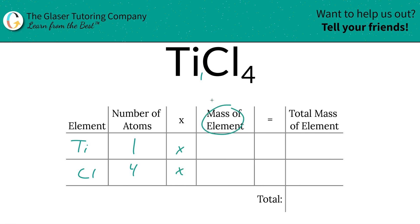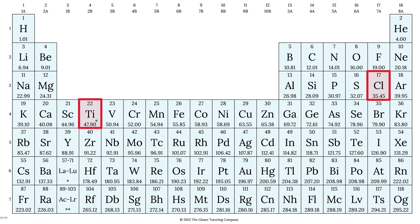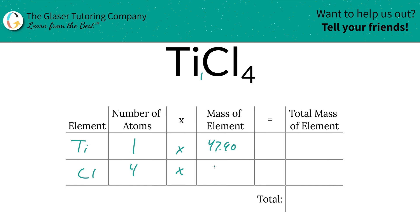Then we're simply going to multiply it by the mass of each element. Those masses are always found on the periodic table. Titanium is 47.90, chlorine is 35.45.